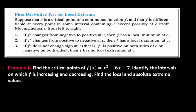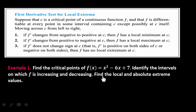Let's go ahead and take this example. Find the critical points of f(x) = x² - 6x + 7. Then we're supposed to identify the intervals on which f is increasing and decreasing, thereby getting the local and absolute extreme values.